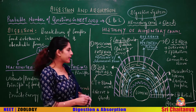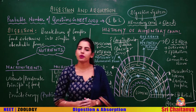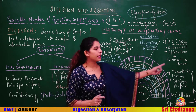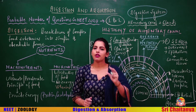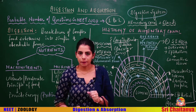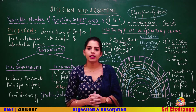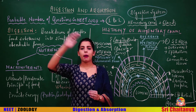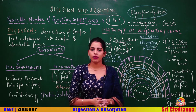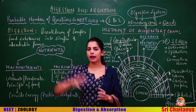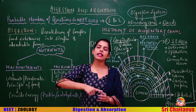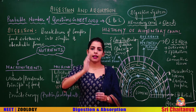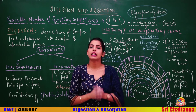The outermost layer is serosa, composed of epithelium along with some connective tissue. Very important to remember the layers from outside to inside: serosa, muscularis, submucosa, and innermost mucosa — or vice versa — as they may be asked in either order.